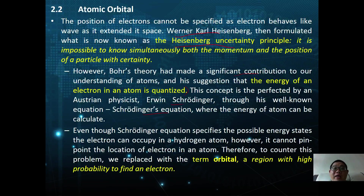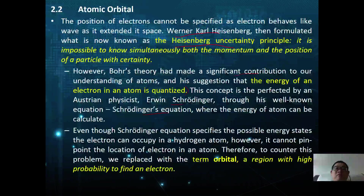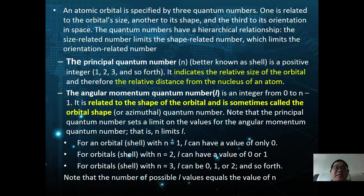This concept was perfected by Erwin Schrödinger in his equation known as the Schrödinger equation. The energy of an atom can be calculated through the Schrödinger equation, which specifies the possible energy states that the electron can occupy in the hydrogen atom. However, it cannot pinpoint the location of the electrons in the atom, so to counter this problem we replace it with the term orbital, where an orbital is defined as a region with high probability to find an electron.